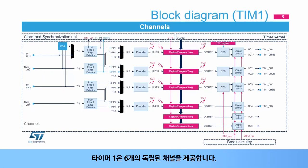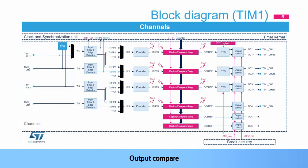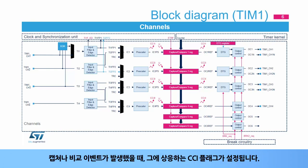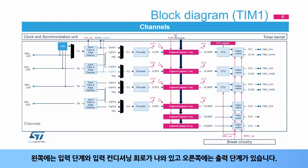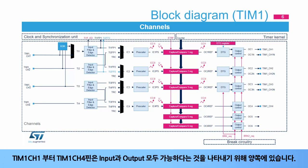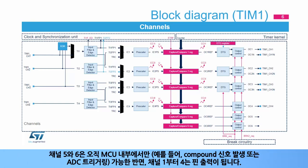Timer 1 supports 6 independent channels for input capture (except channels 5 and 6), output compare, PWM generation in edge and center-aligned mode, and one-pulse mode output. When a capture or compare event occurs, the corresponding CCi flag is set. The input stage and input conditioning circuitry are shown on the left, while the output stage is on the right. TIM1-CH1 to CH4 pins are both input and output capable. Channels 1 to 4 can be output on pins, while channels 5 and 6 are only available inside the microcontroller, for instance for compound waveform generation or ADC triggering.